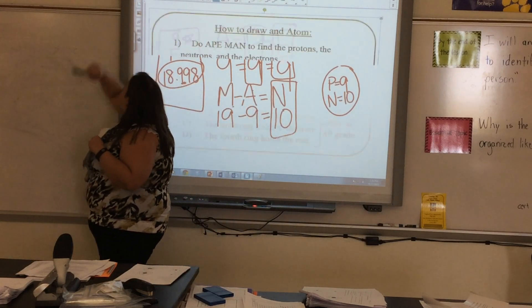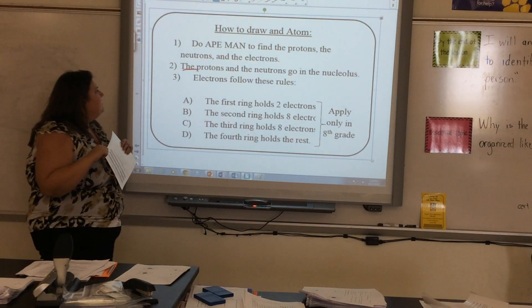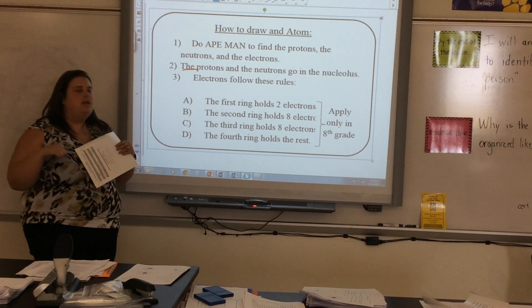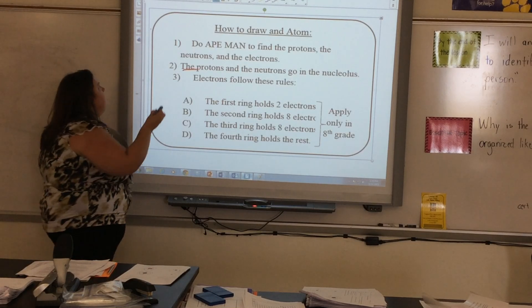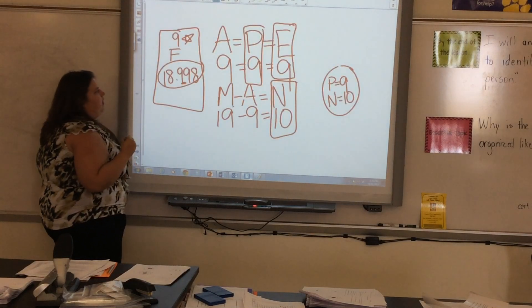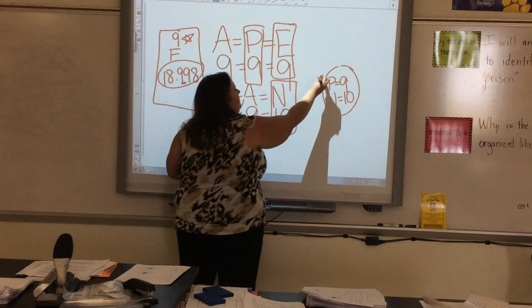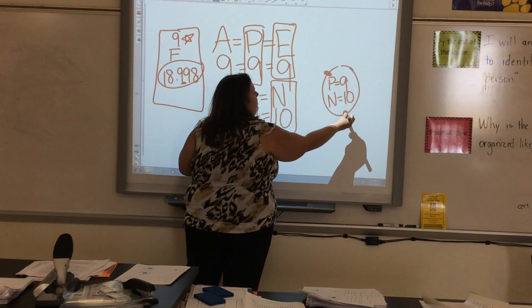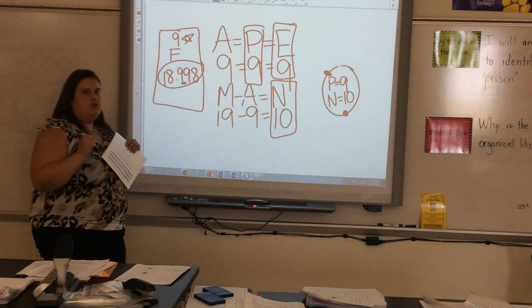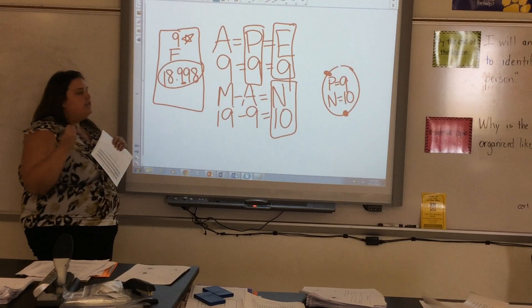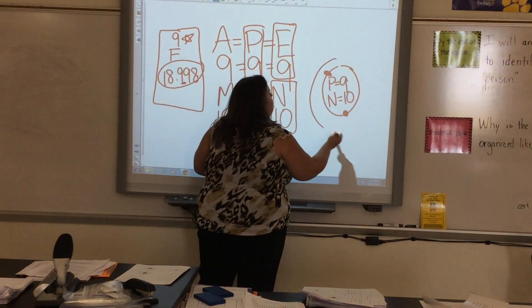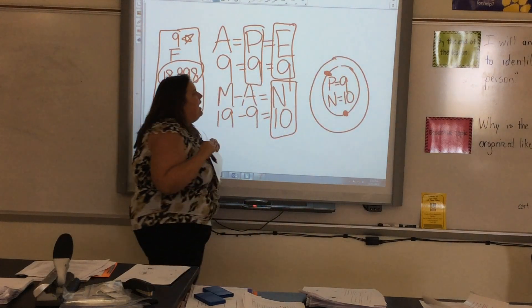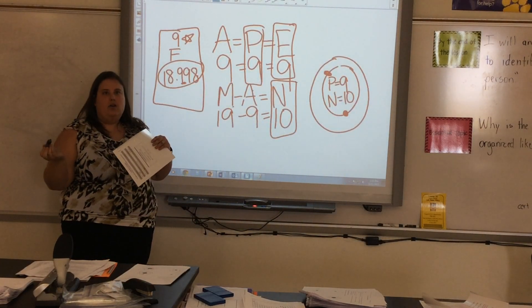So the next thing we're going to look at is our electrons. And electrons follow certain rules. The first ring can only hold 2 electrons. So if I go back to my drawing, I'm going to put 2 electrons. I need 9. I'm going to put 2 on this very first ring. Okay. The next ring, the second ring, can hold 8 electrons. I'm not going to need all 8 of them, though.